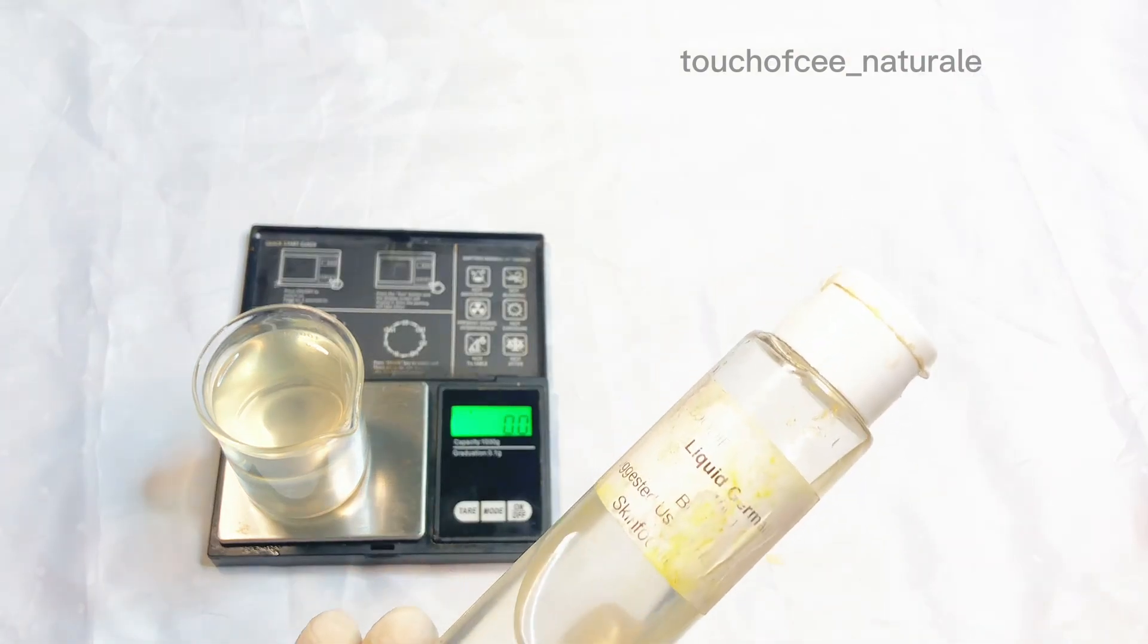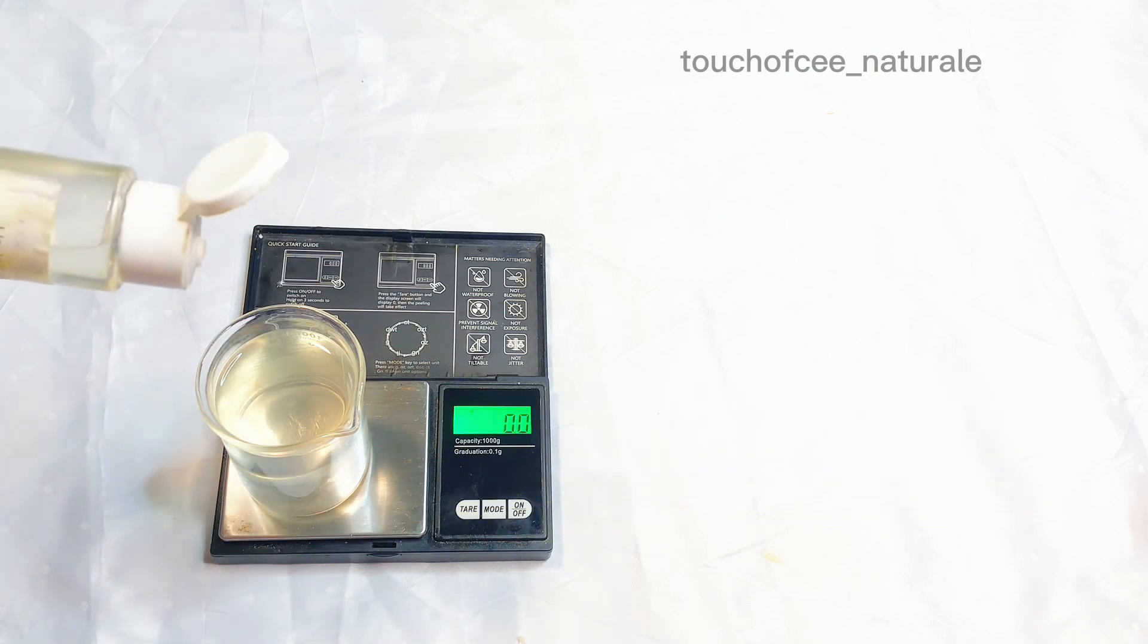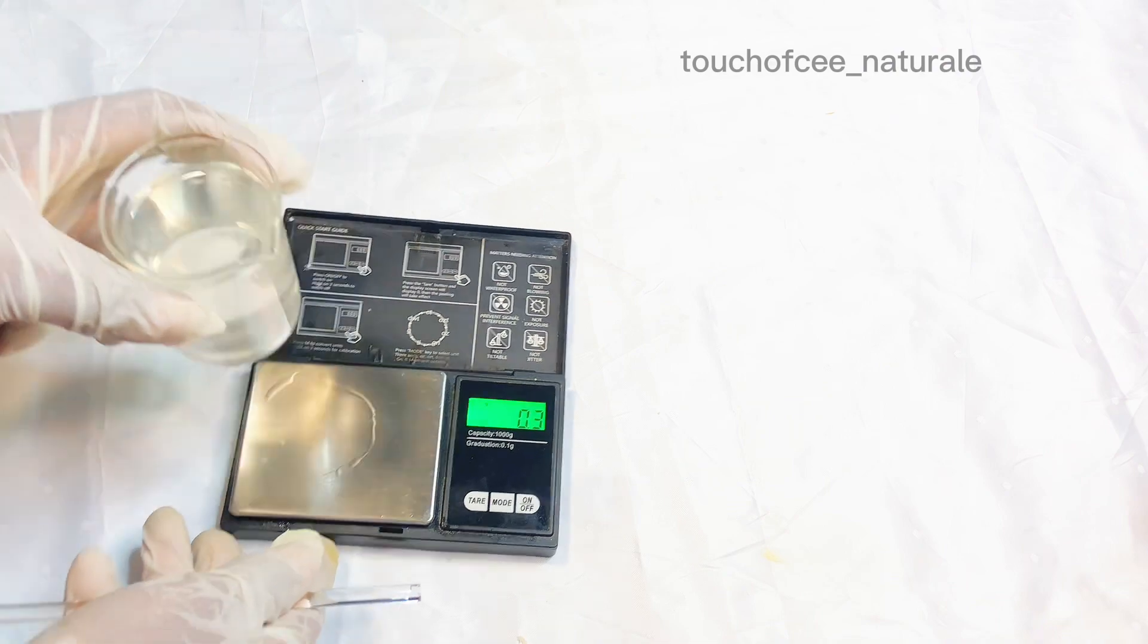The next thing I'll proceed to do is to add my broad spectrum preservative which is my liquid germall plus. I'm just adding liquid germall plus in the desired measurements which I stated out in my formula. I'm going to give it a mix.